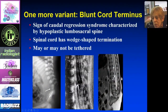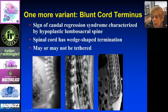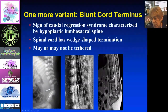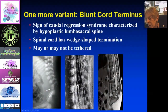One more variant: normally the cord has a tapered end, but in patients with caudal regression — meaning a hypoplastic or partially missing lumbosacral spine — the spinal cord can have a wedge-shaped or blunt end. In a patient missing most of the sacrum, instead of a tapered appearance, the cord has this blunt termination, which is confirmed on the corresponding MRI. This is just a variant seen with spinal anomalies.